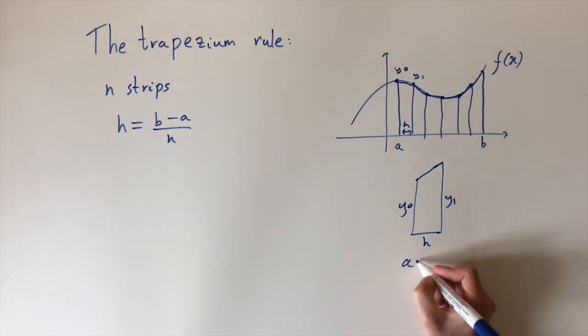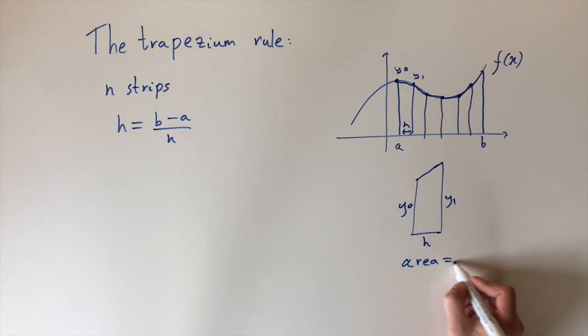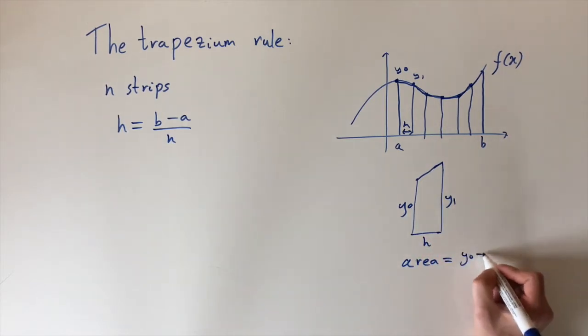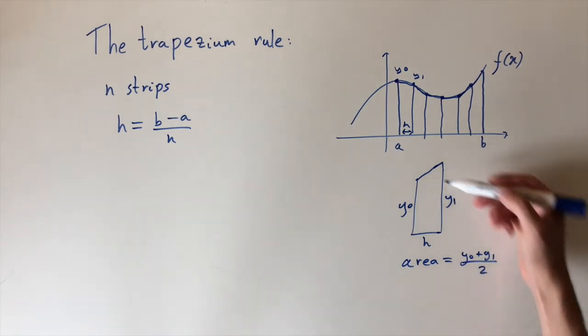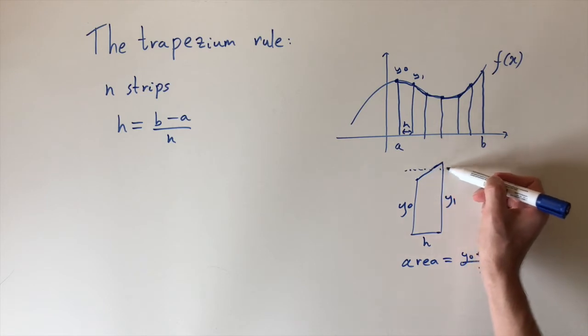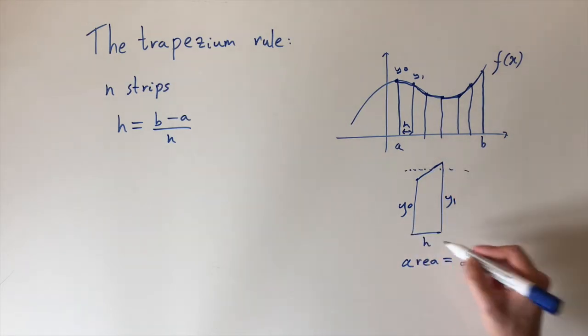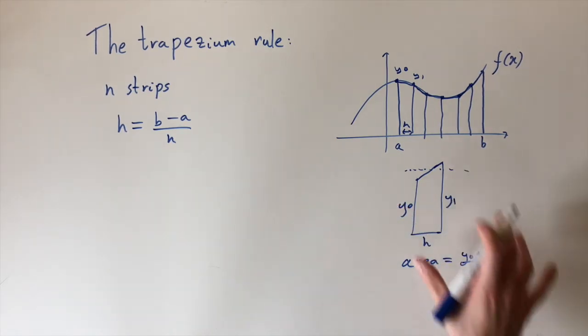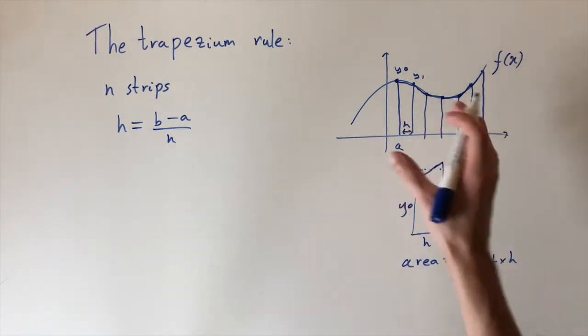There's a formula for the area of this. The area would just be given by the sum of these two values, y0 plus y1, and we divide this by two. So it's like taking the average of the height, and then we multiply it by the width times h. This is the area of just one trapezium, and then we can add up all these areas together to get an approximation.